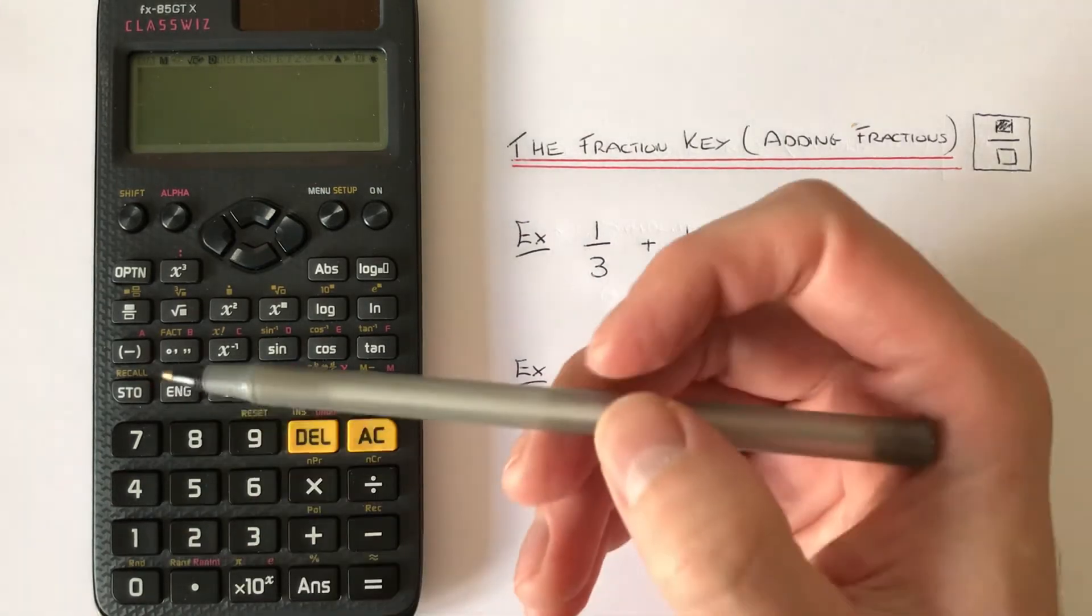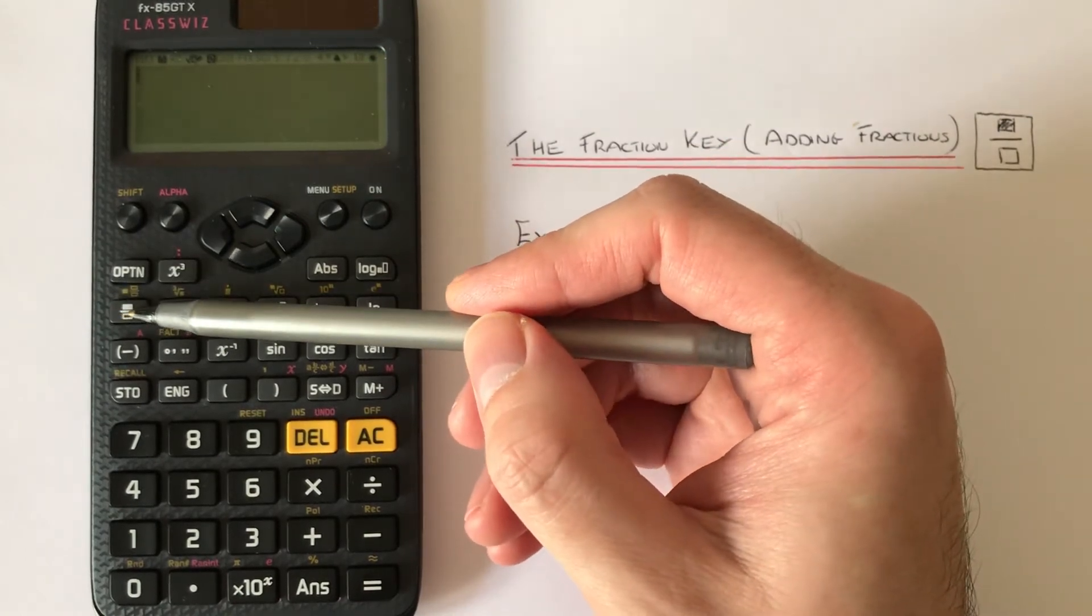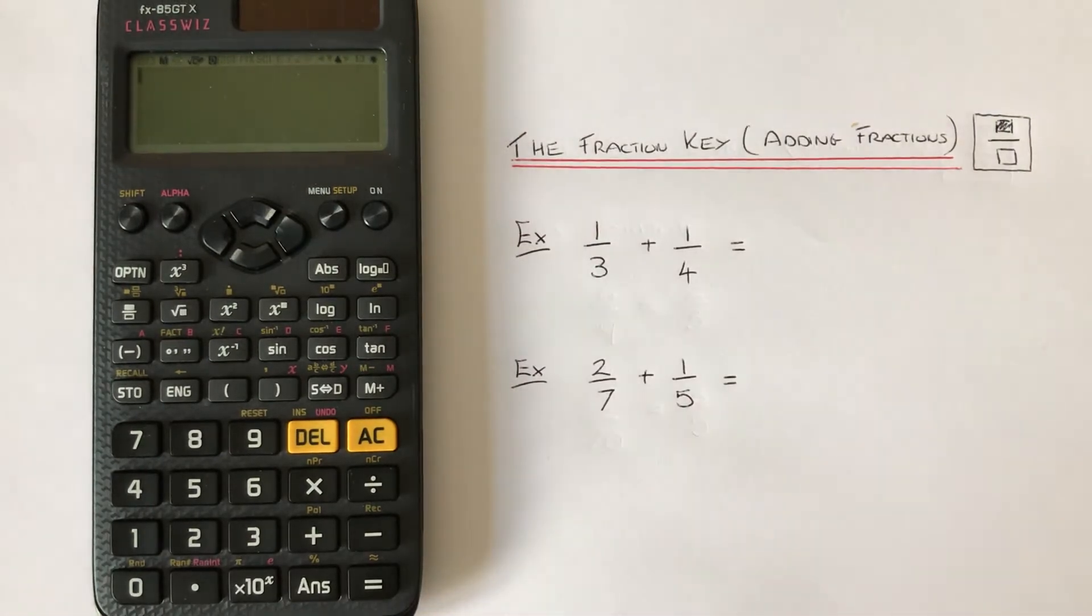To do this we need to use the fraction key located on the second row of the scientific functions. So let's have a look at example one.